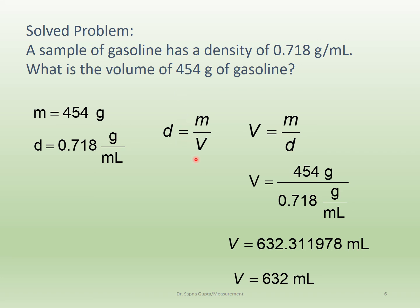Using cross multiplication, take volume up and bring density down. Make sure you always write your units so you can cancel them out and confirm you're on the right track. So 454 grams divided by 0.718 grams per mL: cross out the grams, and milliliters moves to the top, giving a volume of 632.31 milliliters.